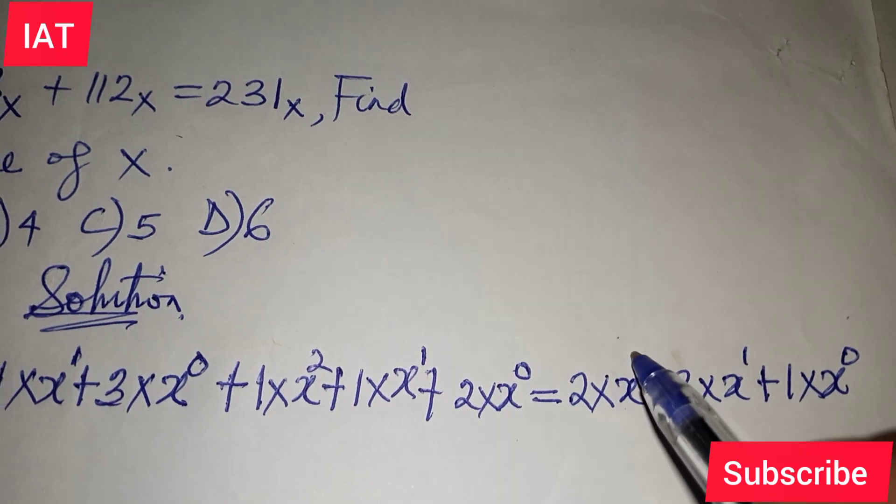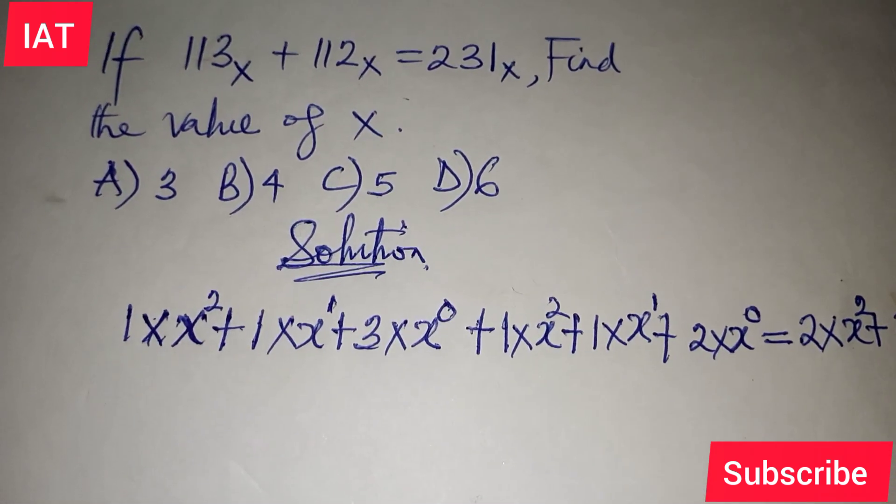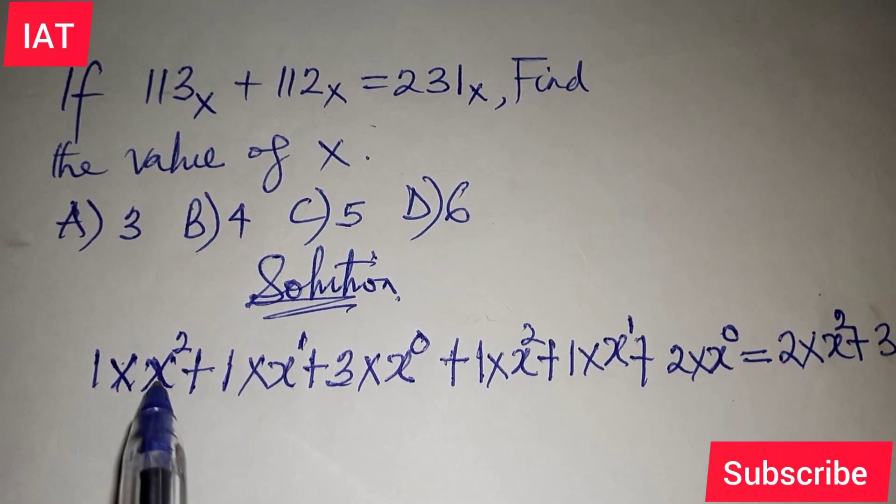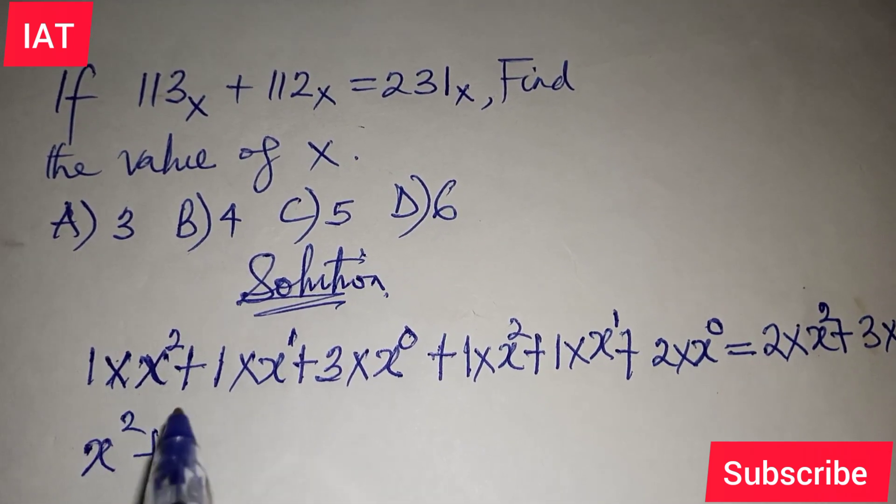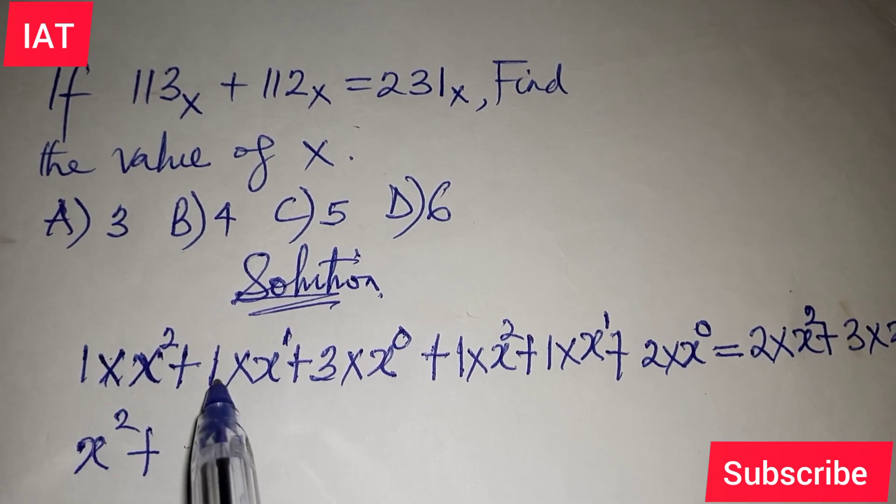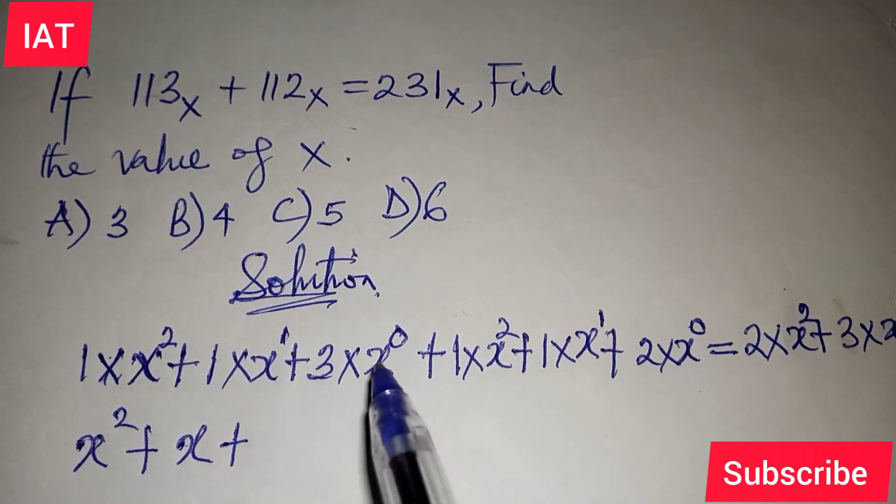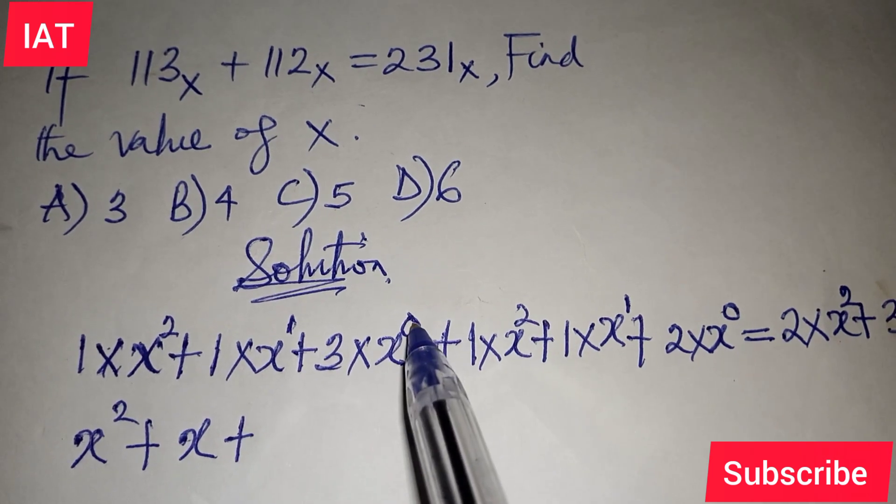The next thing you're going to do is multiply 1 by X squared, which gives you X squared plus X to the power of 1, which is X, plus 3. According to the zero law of indices, anything raised to the power of 0 is 1, so X to the power of 0 is 1. 1 times 3 would be 3.